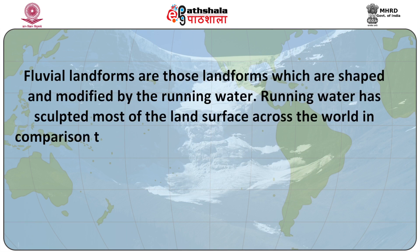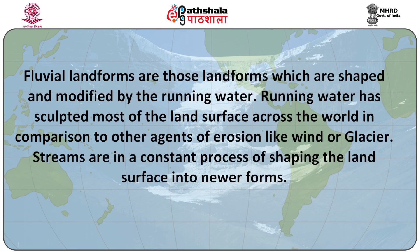Fluvial landforms are those landforms which are shaped and modified by the running water. Running water has sculpted most of the land surfaces across the world in comparison to other agents of erosion like wind or glacier. Streams are in a constant process of shaping the land surface into newer forms. The running water erodes even the loftiest of mountains and carves deep valleys or gorges into it. Besides erosion, it transports heavy load from one place to the other. The present chapter focuses on the landforms produced by fluvial processes, encompassing both the erosional and depositional landforms produced by running water.